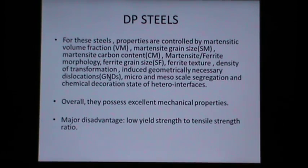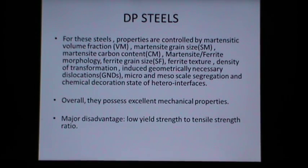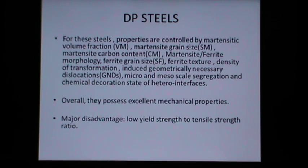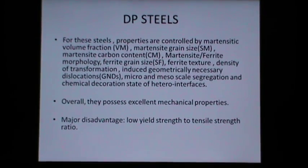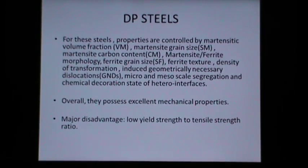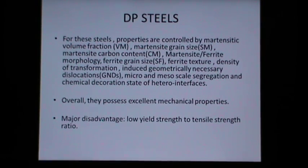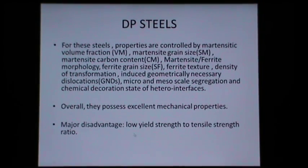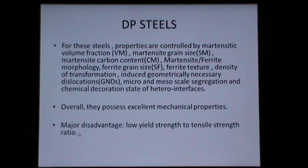For DP steels, properties are controlled by: martensitic volume fraction Vm, martensitic grain size Sm, martensite carbon content Cm, martensite/ferrite morphology, ferrite grain size Sf, ferrite texture, density of transformation-induced geometrically necessary dislocations (GNDs), micro and mesoscale segregation, and chemical decoration state of hetero-interfaces. Overall, DP steels possess excellent mechanical properties, but a major disadvantage is their low yield strength-to-tensile strength ratio.